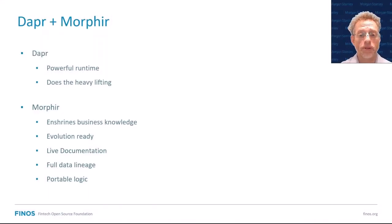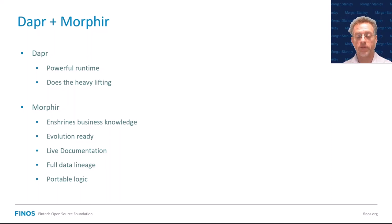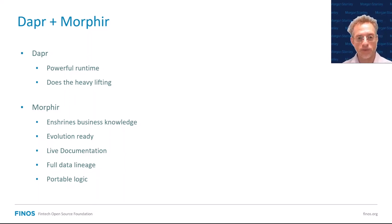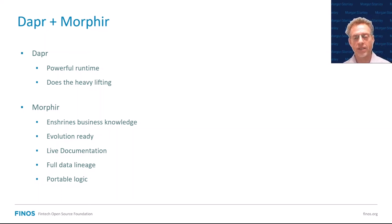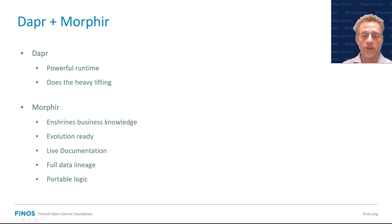And so there we have it — the combination of Dapr and Morpher. With Dapr you get a powerful runtime that does a lot of the heavy lifting we would normally have to do pulling in our own components, making this all work in an effective and efficient runtime. And then Morpher enshrines the business knowledge into a data format so it's protected from technology evolution. It makes it evolution-ready so we can take that same business logic and make it run in different technologies as the technology evolves. It gives us capabilities outside of the runtime — like documentation, live documentation, maybe even interactive documentation so that you can audit how the system came to a conclusion at a particular time.